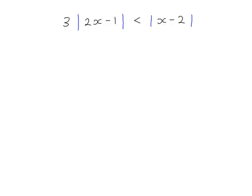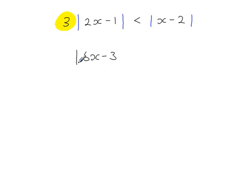In this inequality, the modulus part is multiplied by 3. What you can do is multiply both terms by 3, so you have 6x minus 3. Now you have this expression, and then continue by squaring both sides and using the previous method.